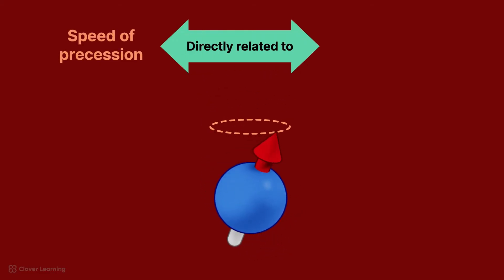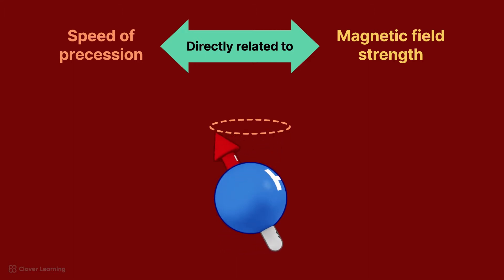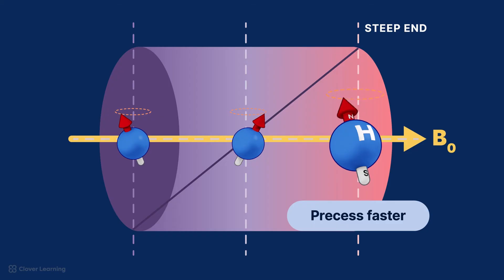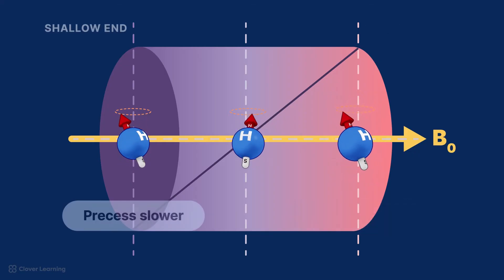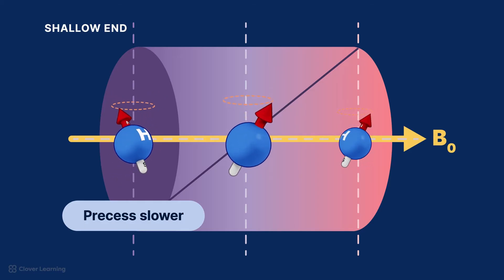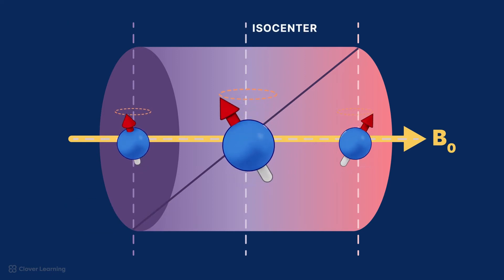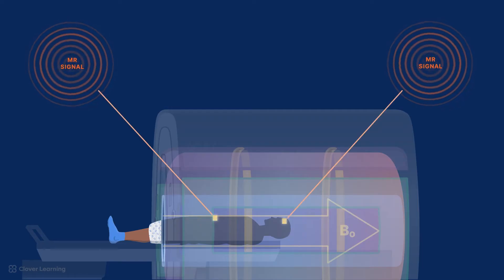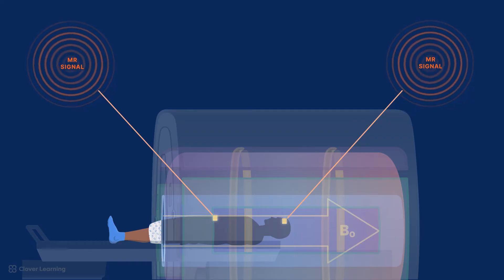Remember, the speed of precession is directly related to the strength of the magnetic field, which can be measured in Tesla or Gauss. The magnetic moments on the steep end of the gradient magnetic field have an increase in their speed, meaning they move further along their precessional path than they would have if we had not applied the PEG. The magnetic moments at the shallow end have a decrease in their speed, moving less along their precessional path. The magnetic moments at the isocenter do not experience a change in field strength and therefore do not change position along their precessional path. Because the magnetic moments are now in different positions along their precessional paths, the MRI system can differentiate between nuclei at different locations because their signals are now different from each other.